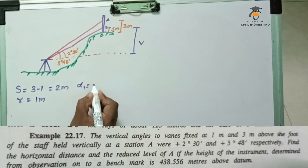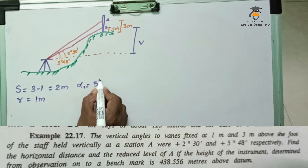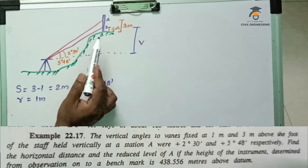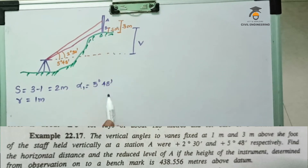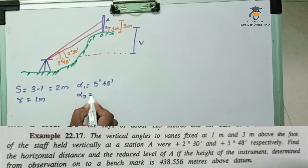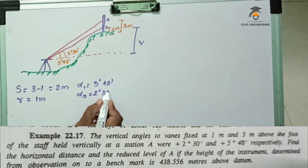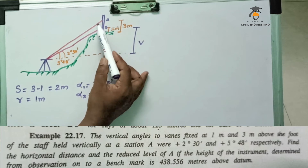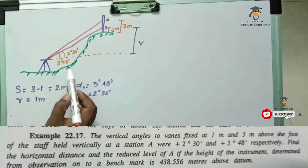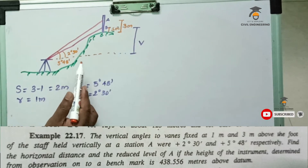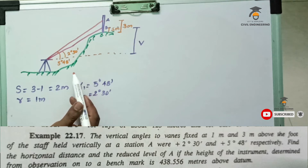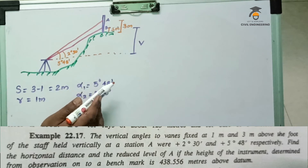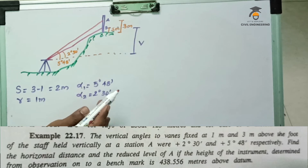Alpha 1 is 5 degrees 48 minutes — this is the top vane reading angle. Alpha 2 is 2 degrees 30 minutes — this is the bottom vane reading angle. Both are angles of elevation. The lower reading value is alpha 2 and the upper reading is alpha 1.